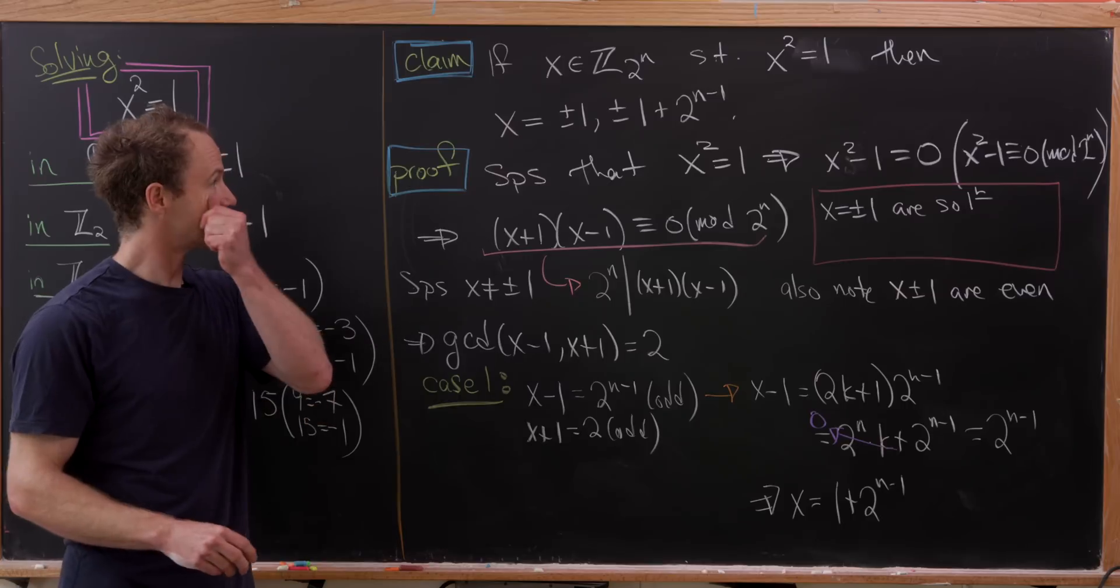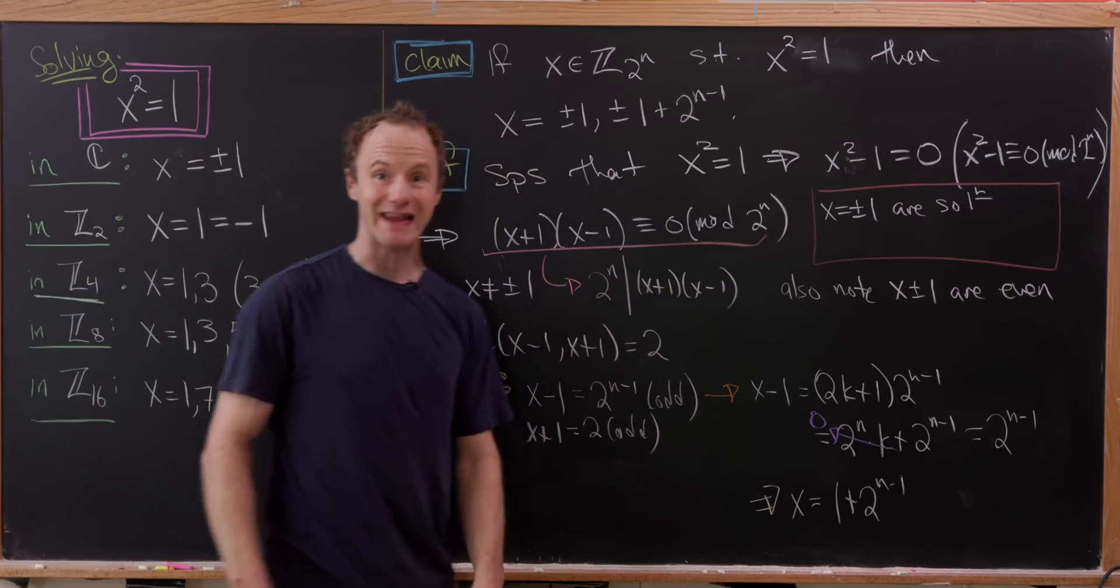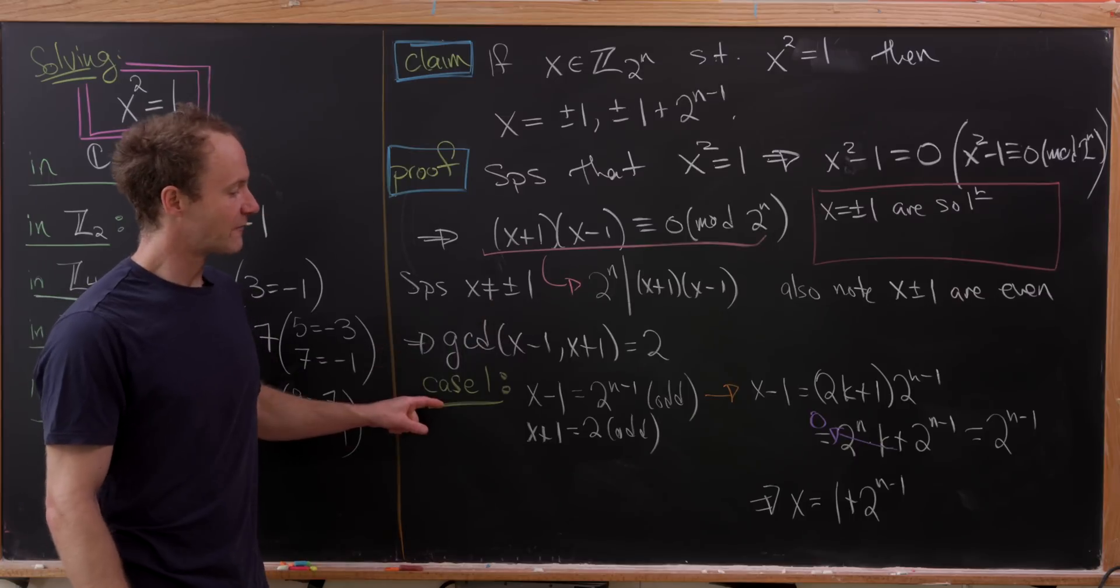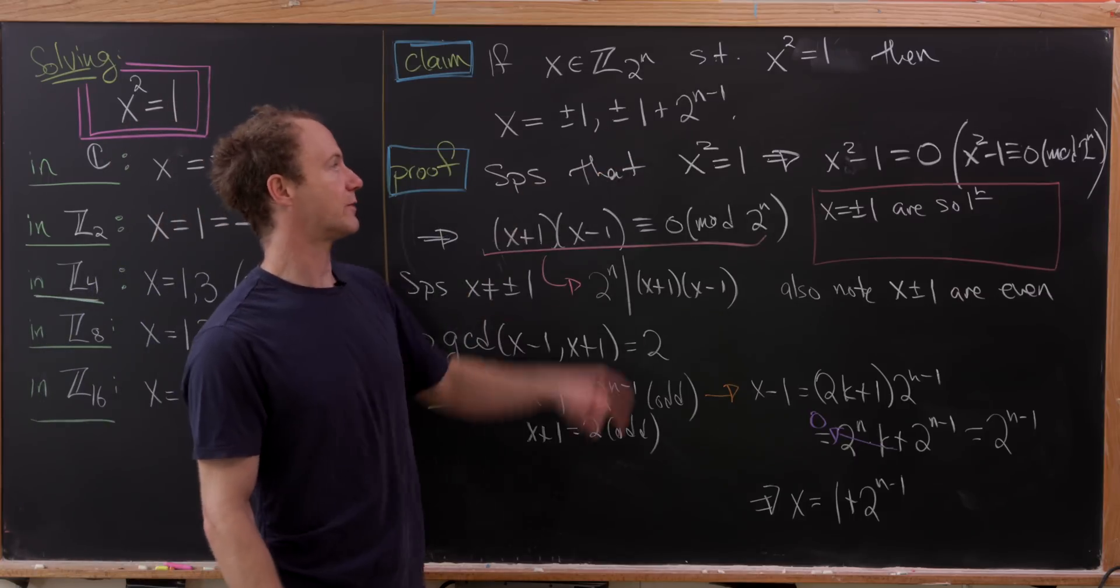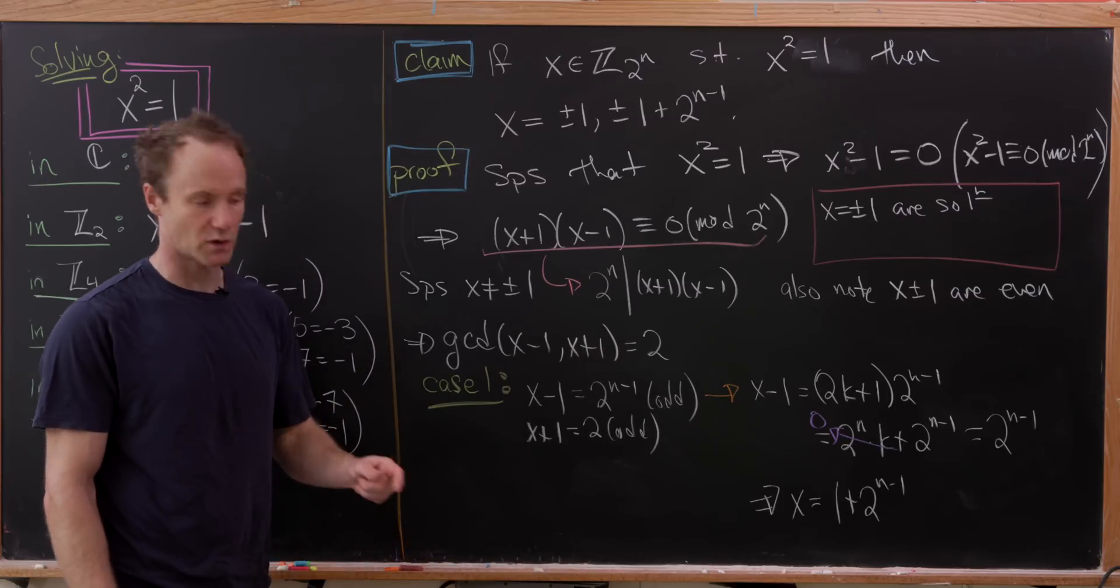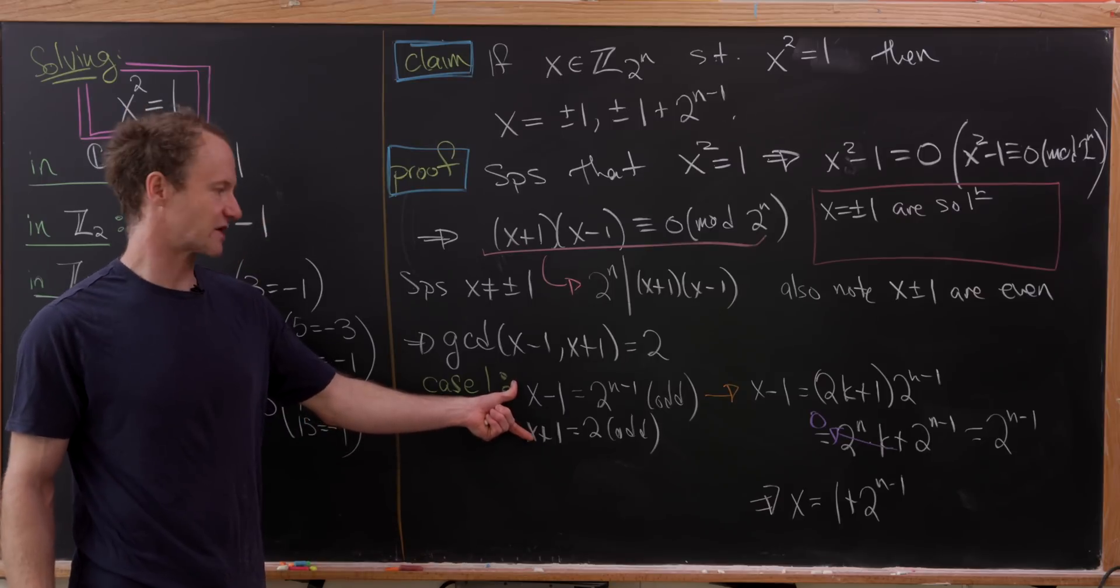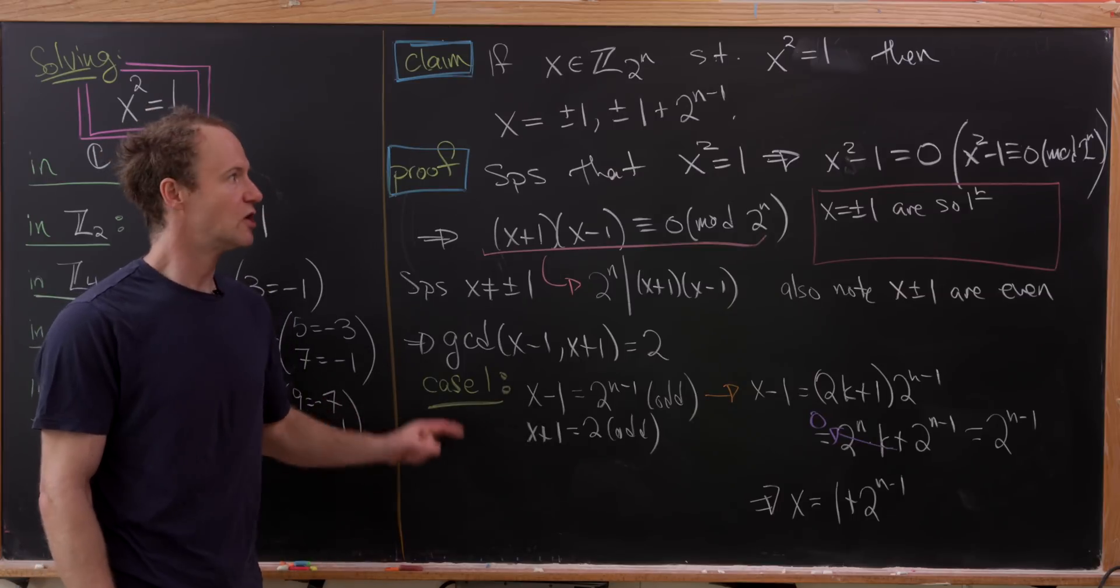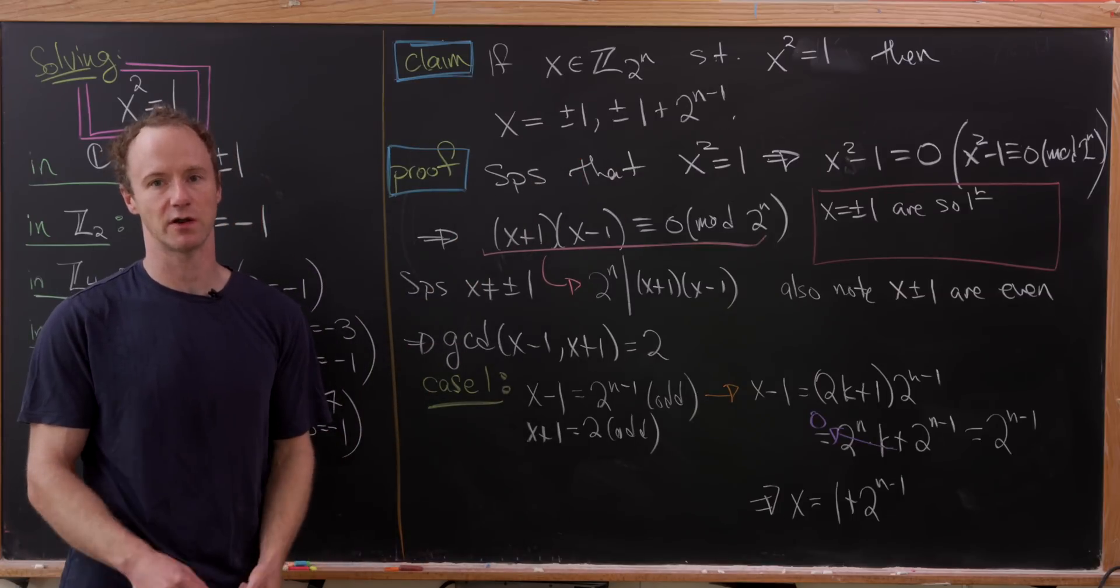So let's see. We had our ±1 solution from our kind of easy out right here. But when we suppose that wasn't the case, from this first case that we took, we got our 1 + 2ⁿ⁻¹ solution. And from the second case, which is the other way of splitting up the factors of 2 among these two numbers, x+1 and x-1, we'll see that we get the other solution. But I'll let you check those details if you want.